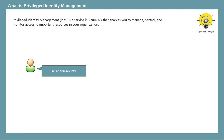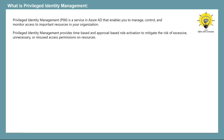But let's say your requirement is to assign permissions to your administrators for a certain duration of time — for example, one hour or 24 hours — and after this duration, these permissions should be revoked automatically, so that administrators do not have permanent access to your organization's resources. This is where Privileged Identity Management comes into the picture. PIM provides time-based and approval-based role activation to mitigate the risk of excessive, unnecessary, or misused access permissions on your organization's resources.